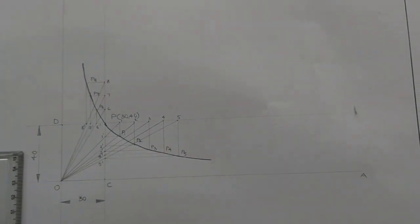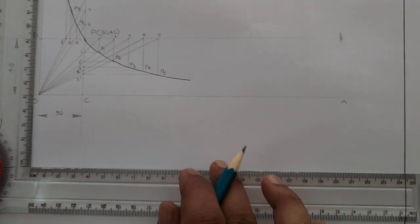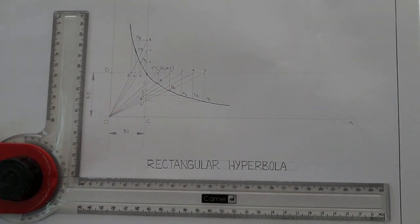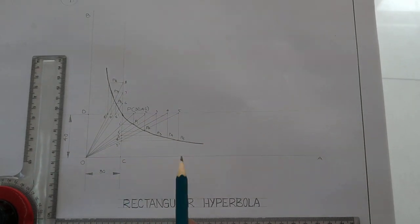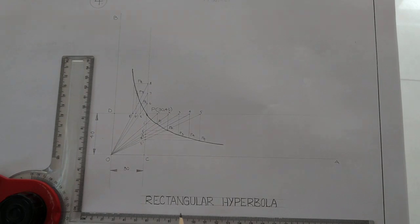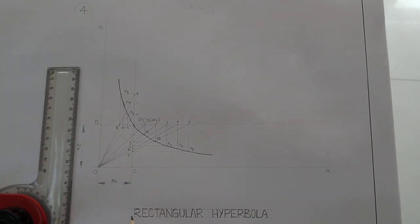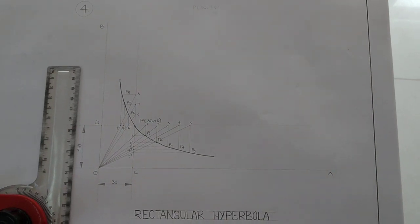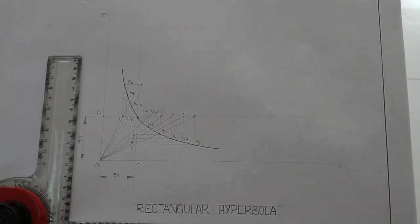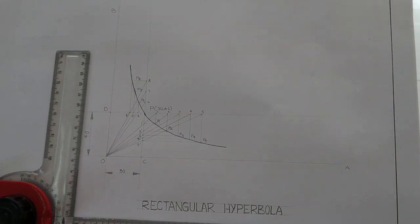This is about the construction of rectangular hyperbola. Once the diagram is over, we should give the subtitle to this particular diagram — that is 'Construction of Rectangular Hyperbola' — within the guidelines, with a gap of 7 mm between the guidelines. If you like this content, you can subscribe and share with your friends. Thank you.